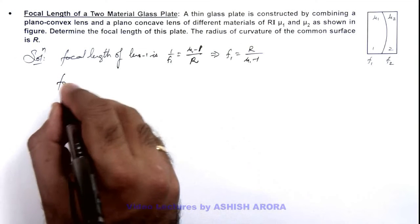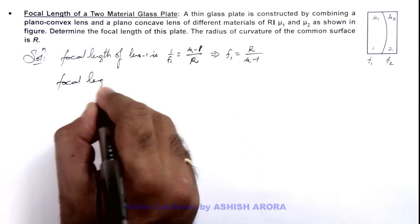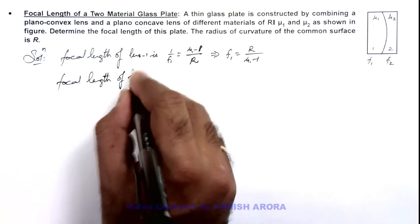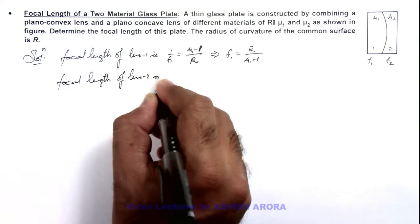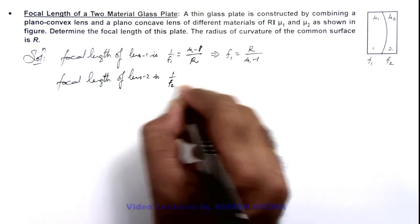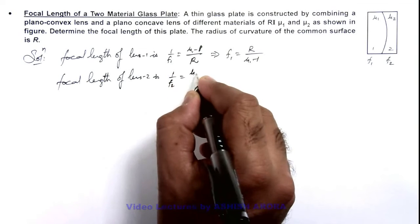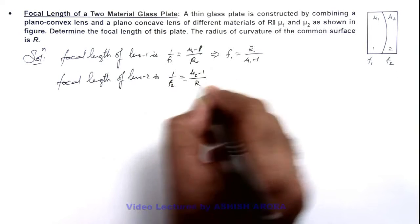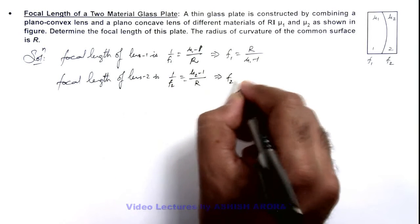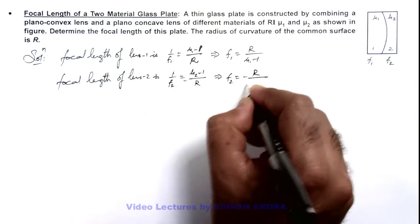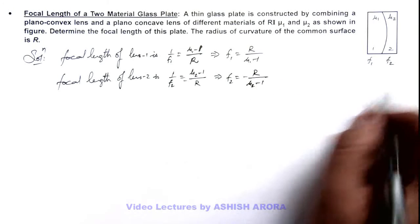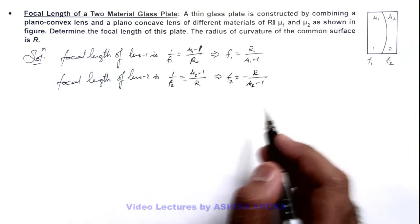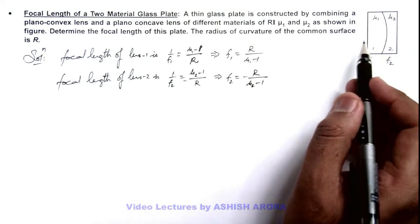And similarly, the focal length of lens 2 we can get by 1 by f2 is equal to mu 2 minus 1 divided by minus r. The value of f2 we are getting is minus r by mu 2 minus 1, as this is a diverging lens and the first one is a converging lens.